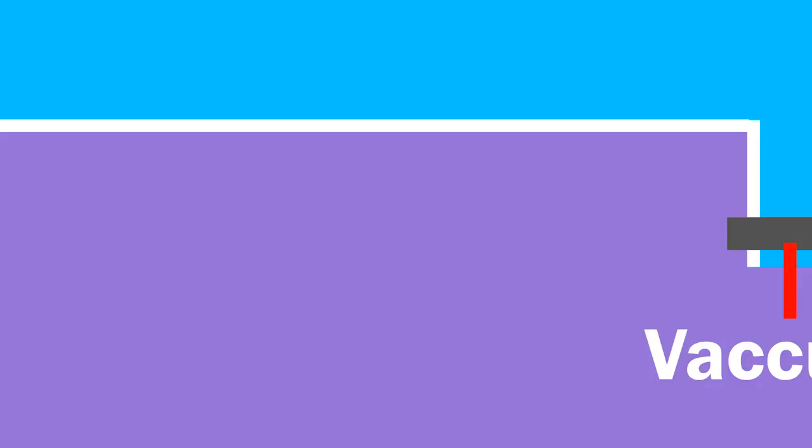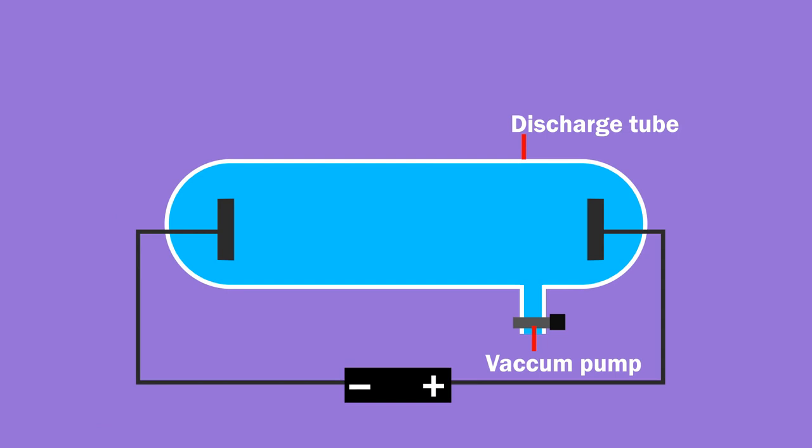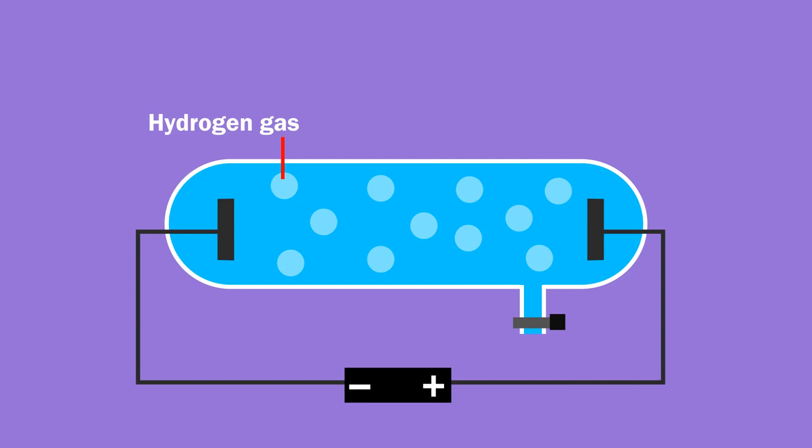Goldstein's setup was inspired from Crookes' setup. It had a discharge tube with two electrodes. But instead of the tube being almost empty, Goldstein filled it with hydrogen gas. He also switched the position of cathode and anode electrodes. Instead of a normal cathode plate, Goldstein used a cathode plate containing a hole and placed a fluorescent screen behind it.